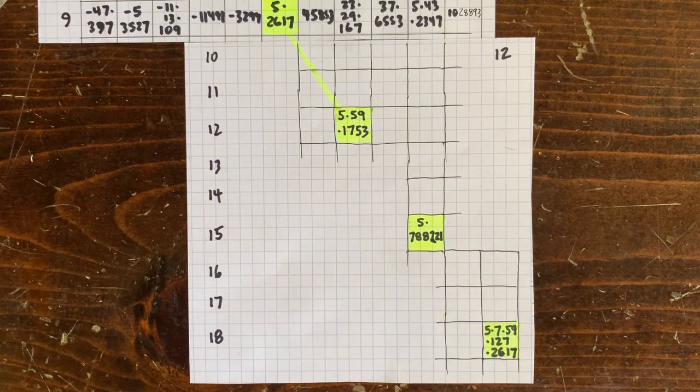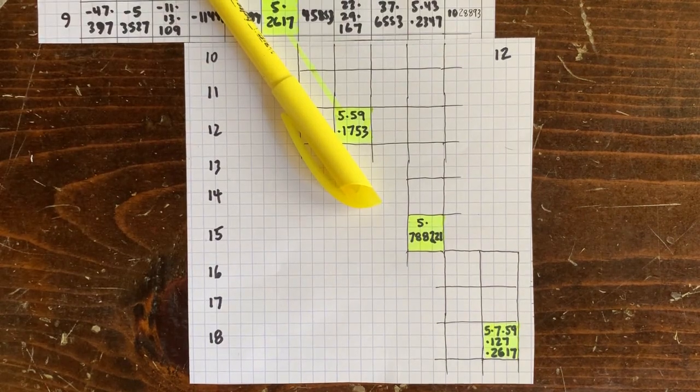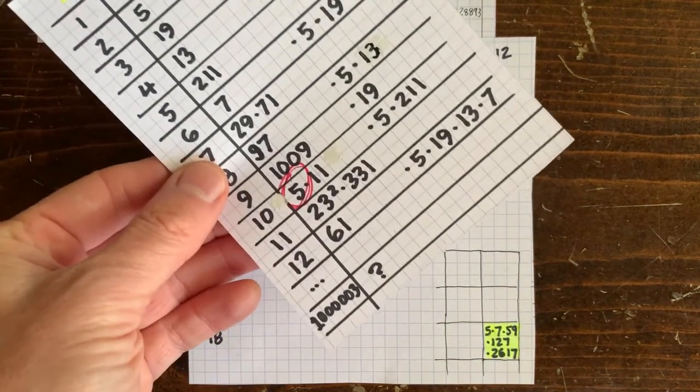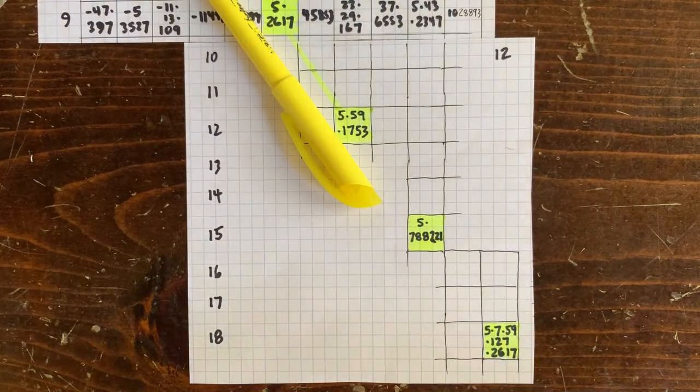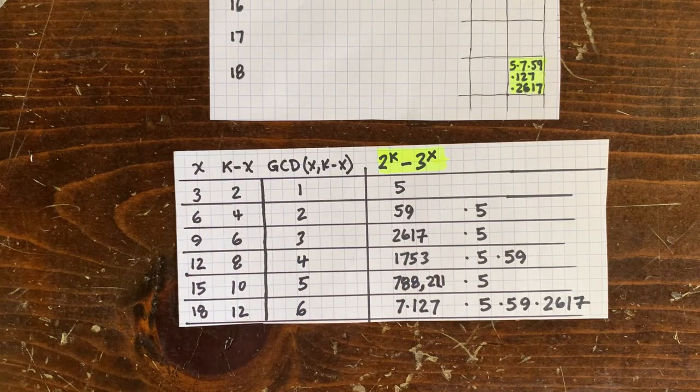This diagonal is just like the chart for 3 to the x minus 2 to the x, except it's a diagonal. So if we straighten it up, we get this chart. Here we've again got inherited factors and newly introduced factors.